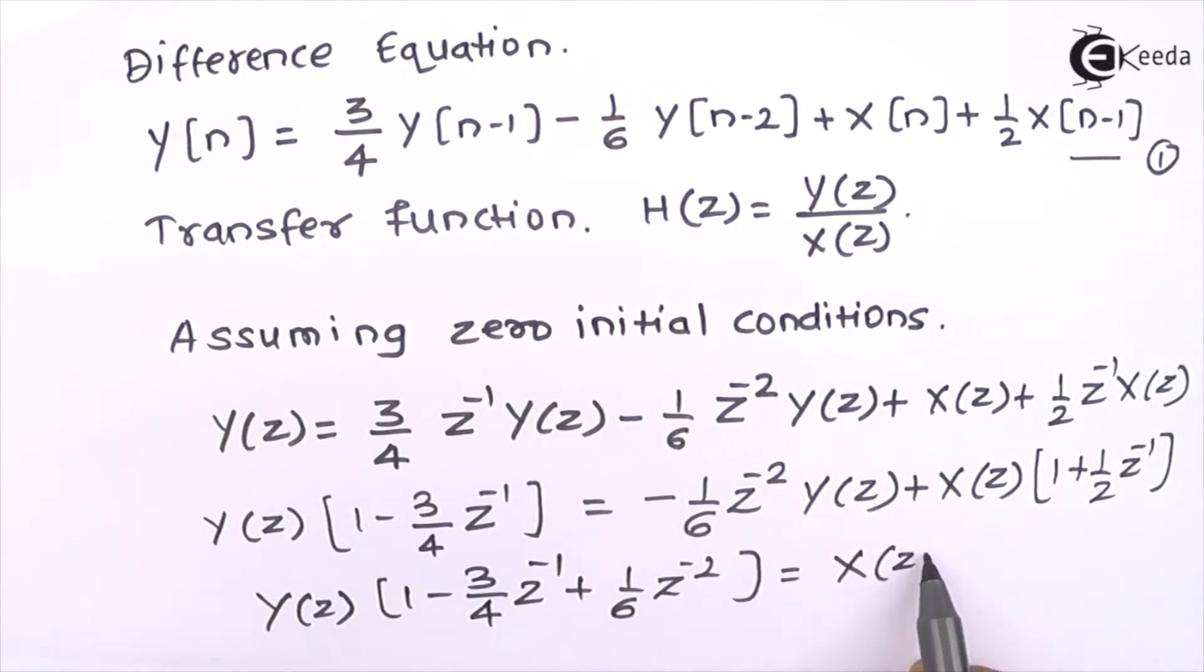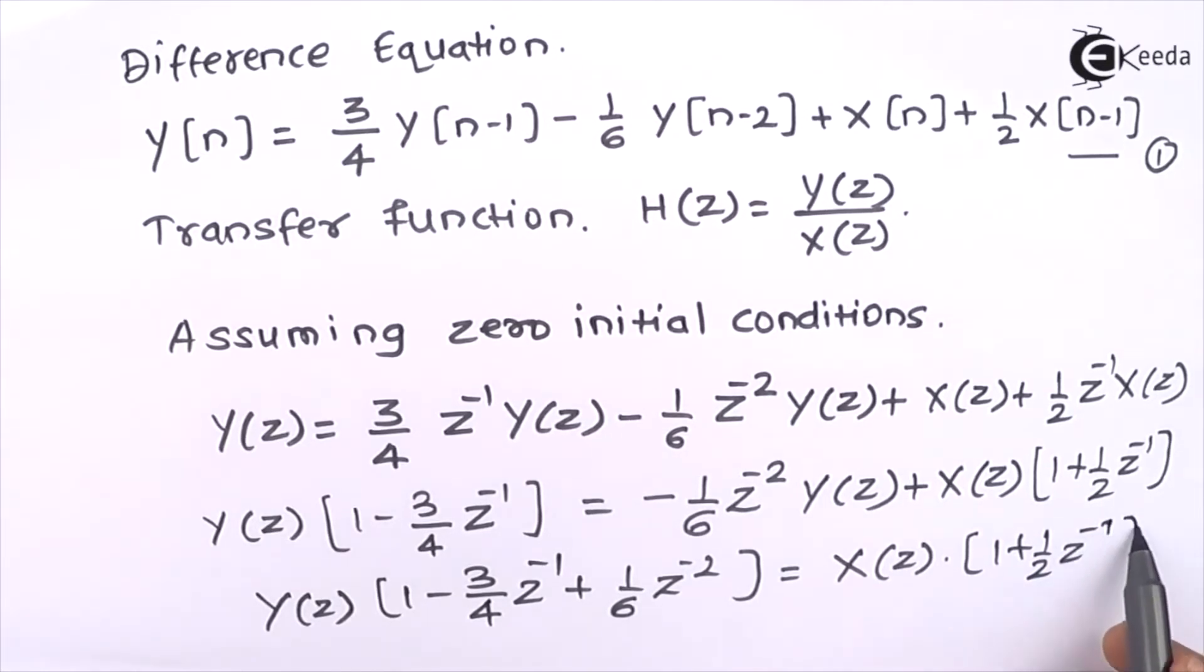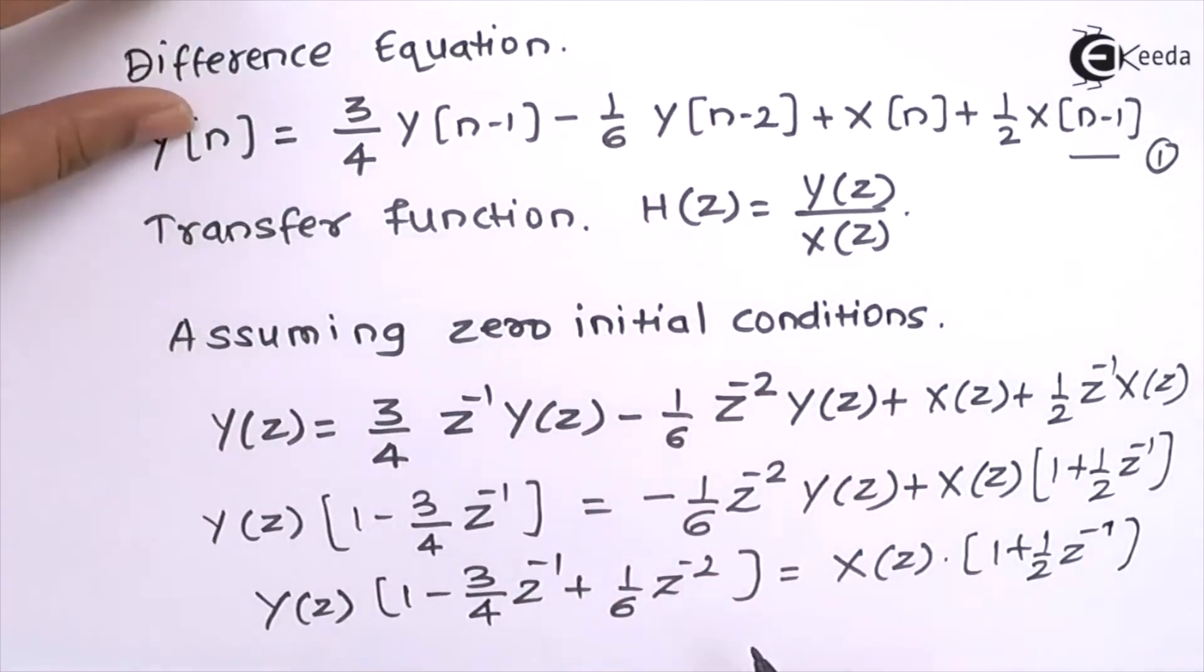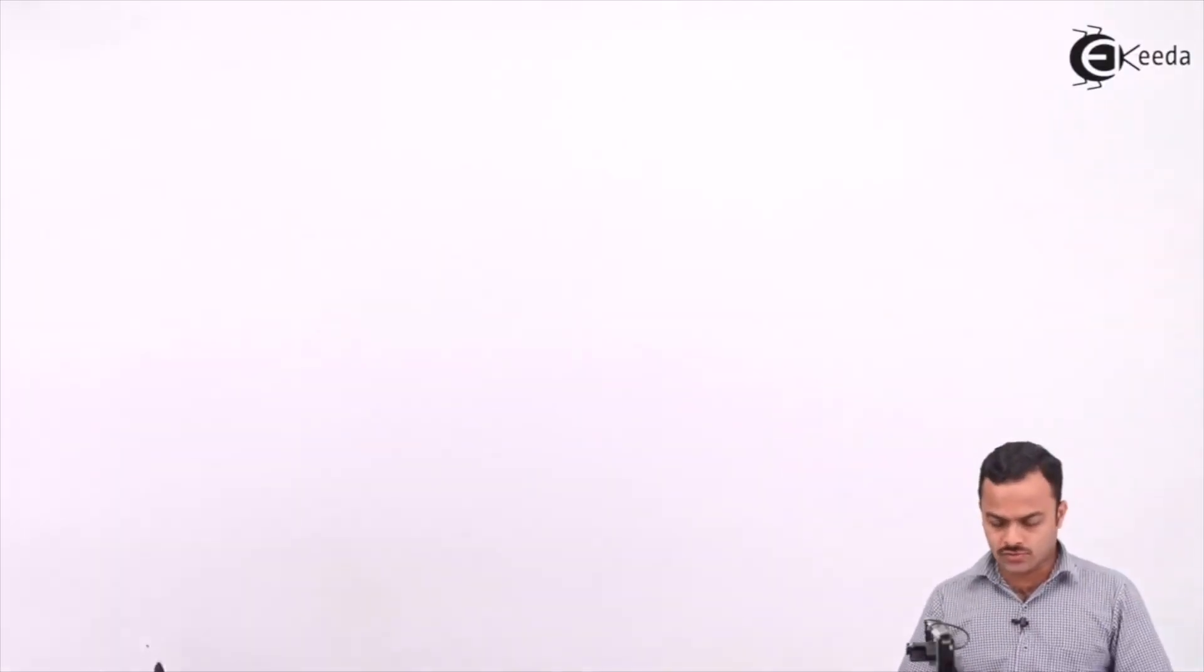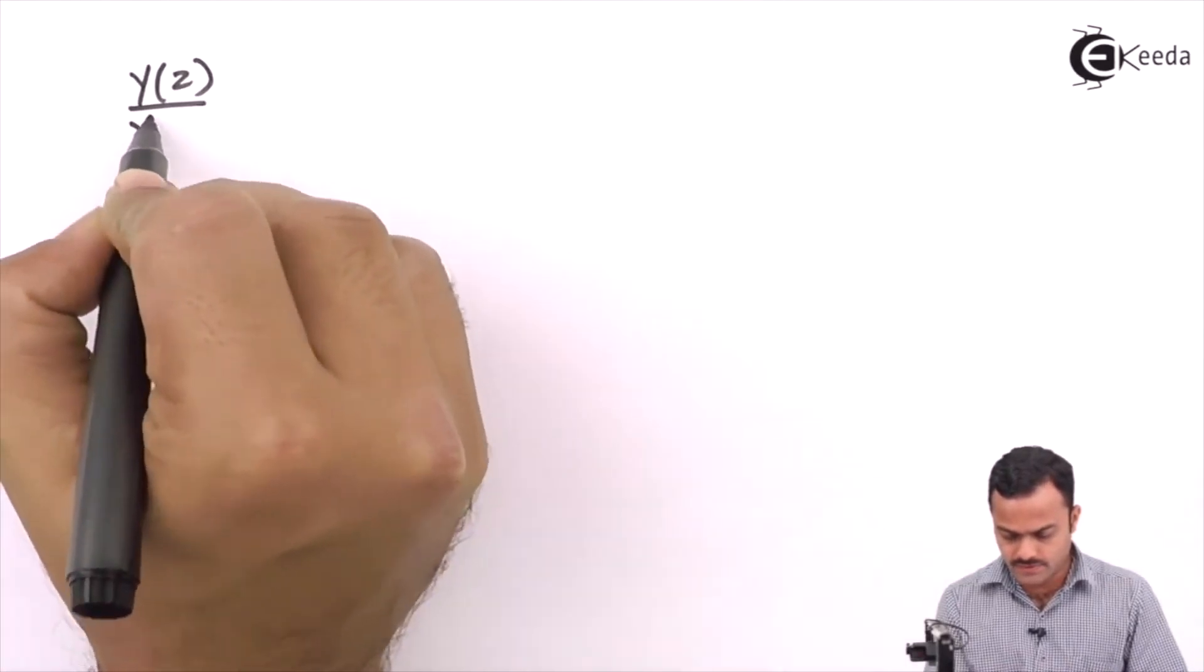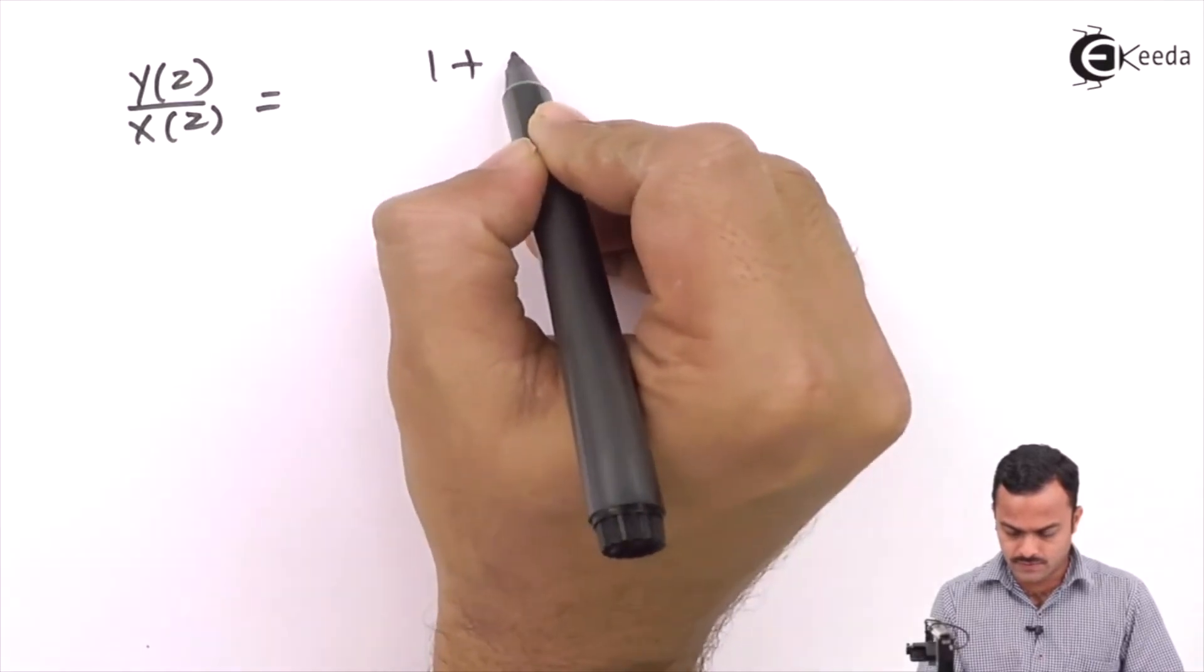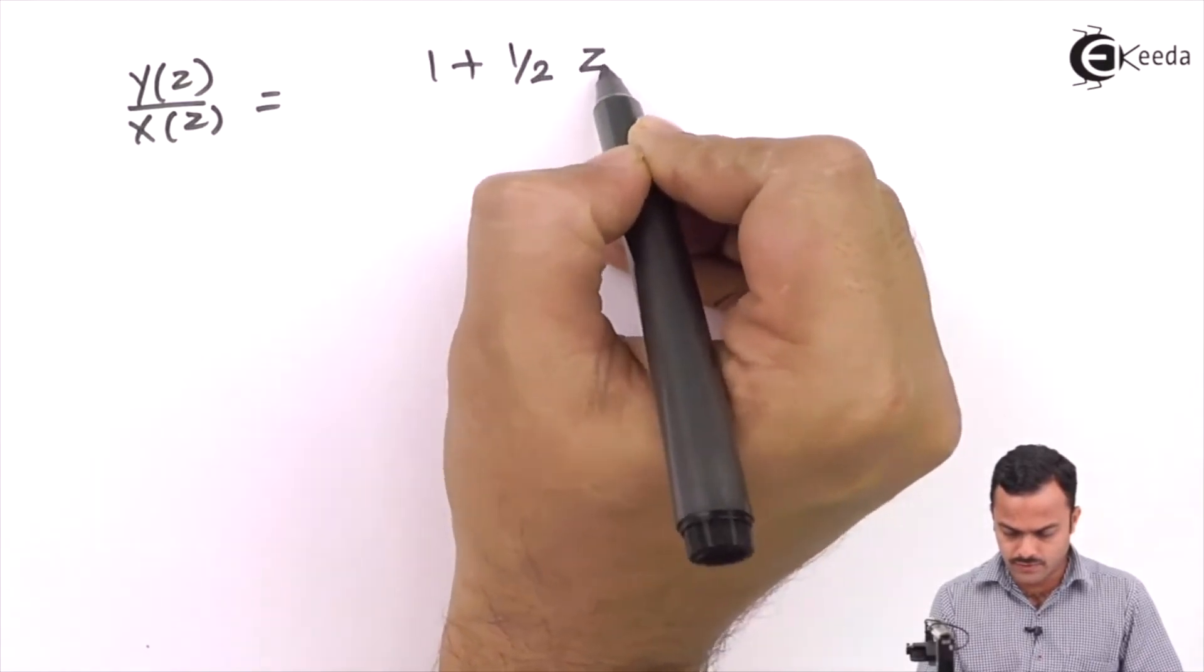Equal to X(z)(1 + 1/2 z^(-1)). So I want a ratio. If I take a ratio I will get Y(z)/X(z) as 1 + 1/2 z^(-1).